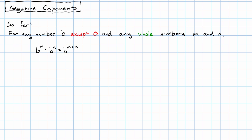Now, we want to say what it means to have a negative exponent, so that this rule still works if m or n or both are negative integers.